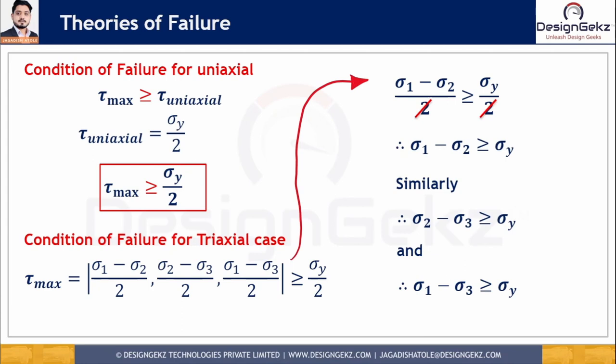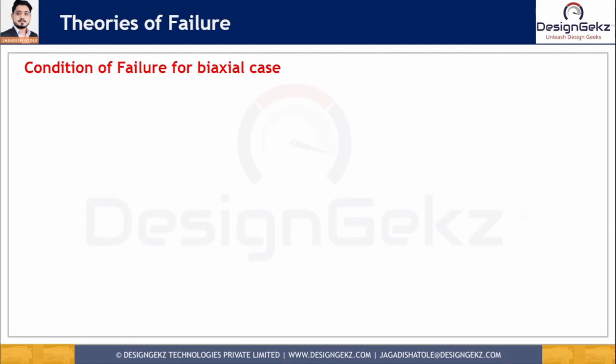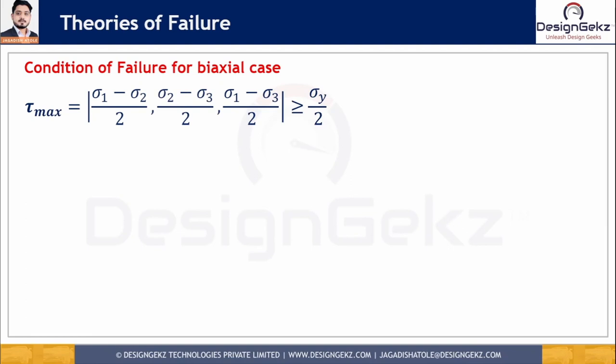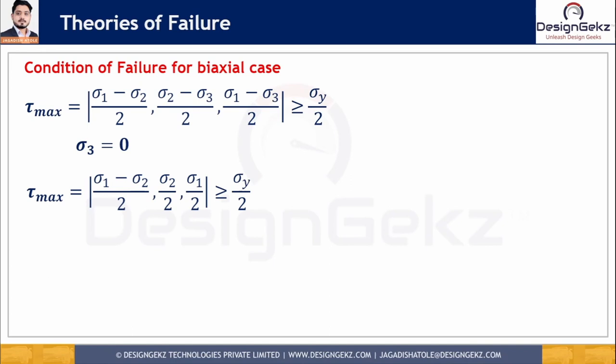The principal stresses σ1, σ2, σ3 can also be written as σ_x, σ_y, σ_z. For a biaxial state of stress, one principal stress is zero — let's assume σ3 = 0. Then the maximum shear stress under this biaxial condition is the maximum of (σ1 − σ2)/2, σ2/2, and σ1/2 ≥ σ_y / 2. The failure condition gives σ1 − σ2 ≥ σ_y after cancelling 2 from both sides.